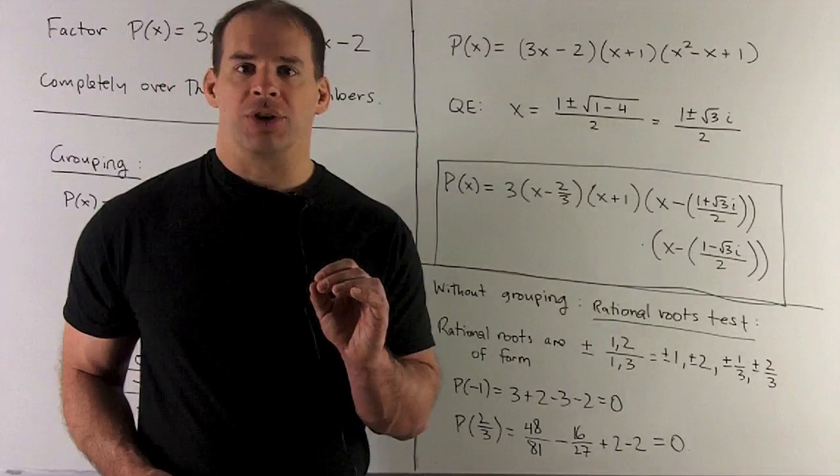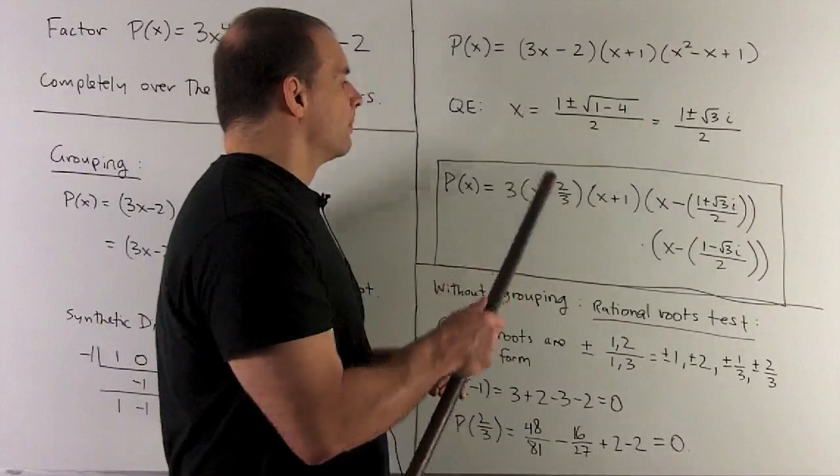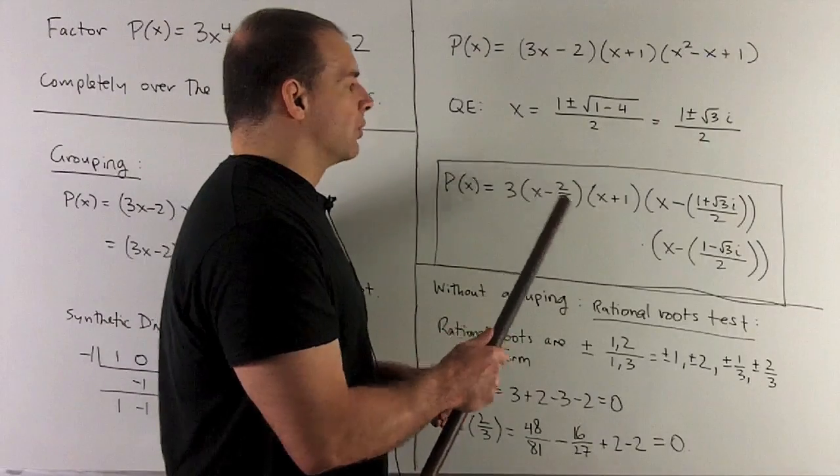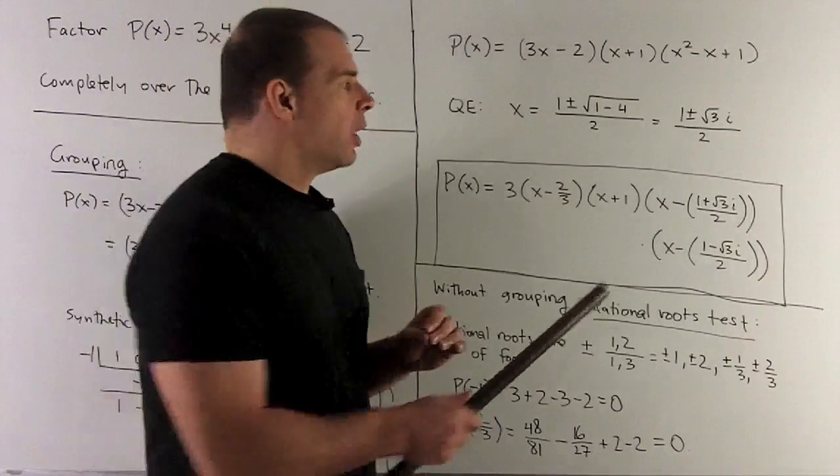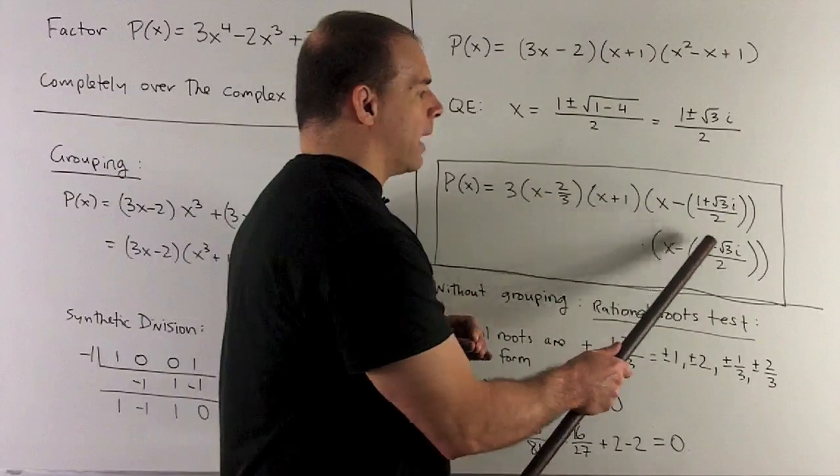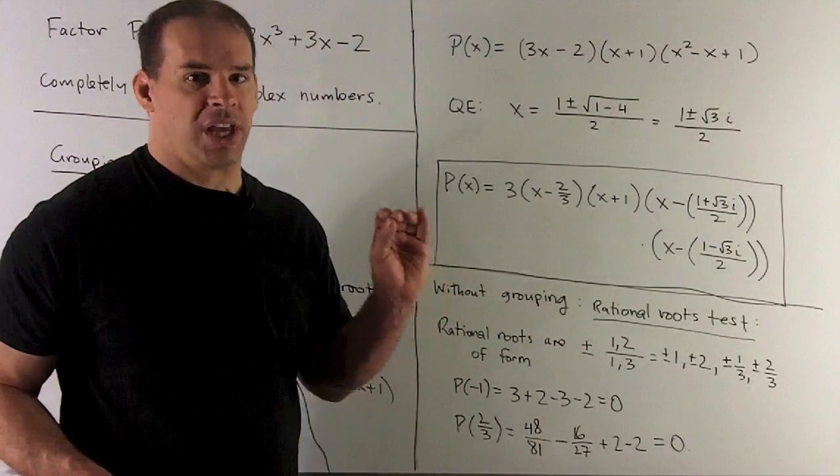For our complete factorization, first I'll pull the 3 out of this so the root that we're using is clear. It's going to be 3(x - 2/3)(x + 1)(x - (1 + √3i)/2)(x - (1 - √3i)/2). So that's our complete factorization.